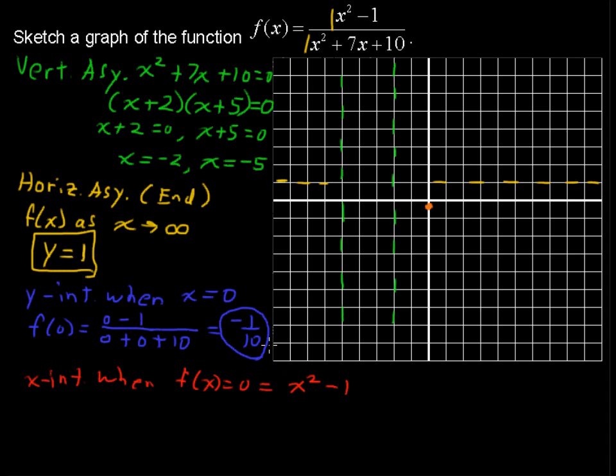So we're only looking at the numerator to find out when the function equals 0. Solving this, let's add 1 to each side and say 1 equals x squared. Take the square root and say plus or minus 1. So those are our x-intercepts, plus or minus 1.